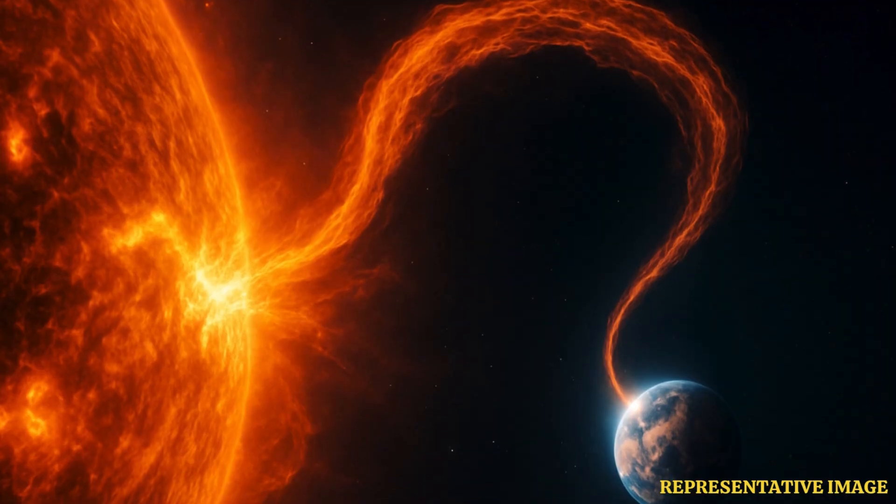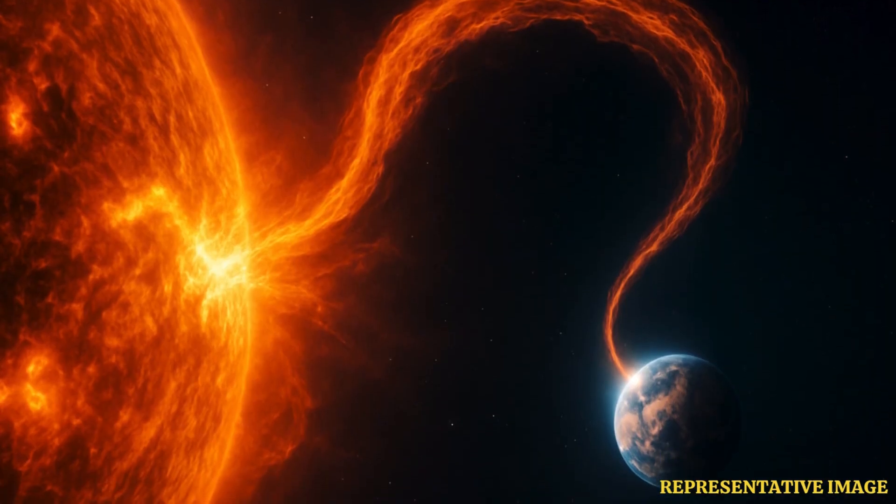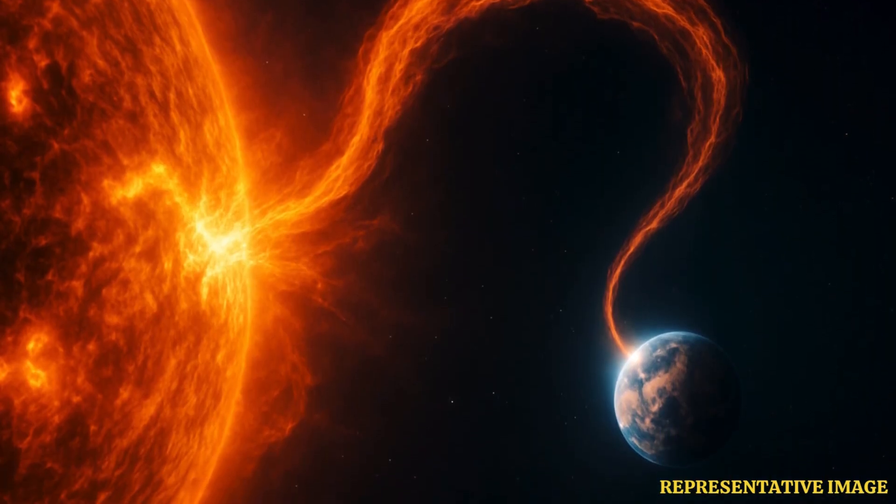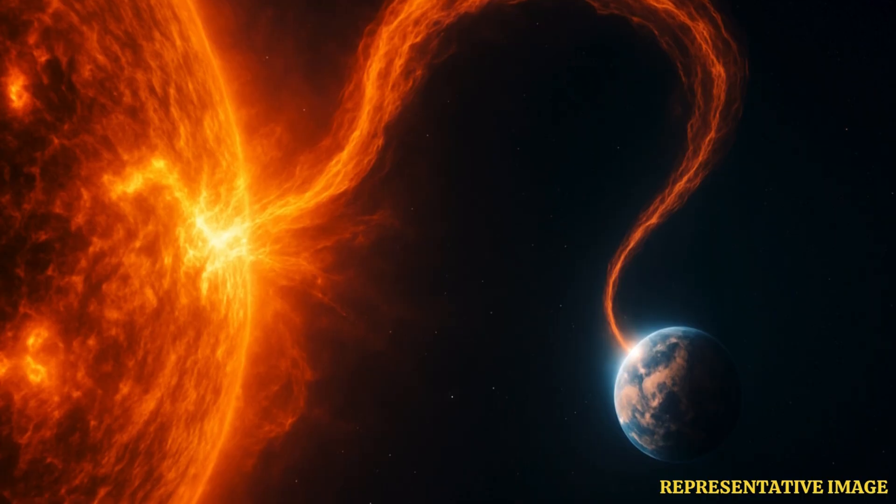The long, snake-like filament cartwheeled its way off the sun in a stunning ballet. The magnetic orientation of this Earth-directed solar storm is going to be tough to predict.